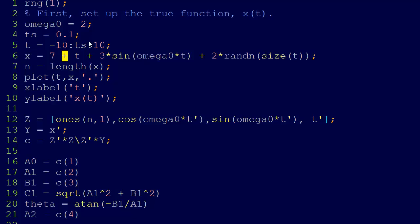And so here's the true function right here. 7 plus t plus 3 sine omega naught t plus 2 randn size of the size of t. So what we're doing is we're just adding noise with two standard deviations. Two sigma, that's the size of the noise here.